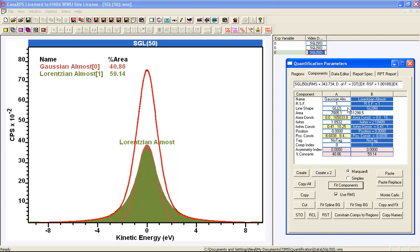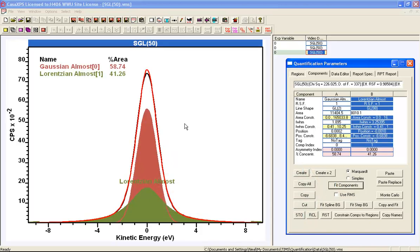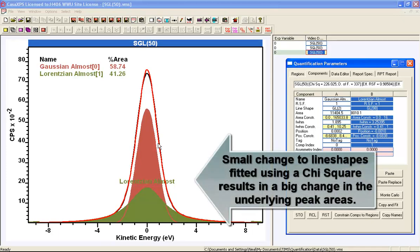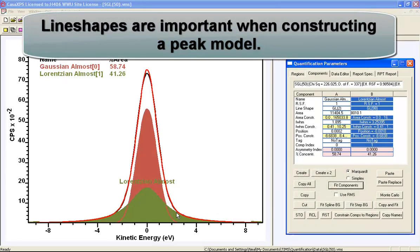But if we go to the chi-square option, then we get a very different answer. You can see how the ratio of the Lorentzian and the Gaussian have changed dramatically simply because we are using a scaling of the differences between the data and the synthetic envelope using the chi-square.